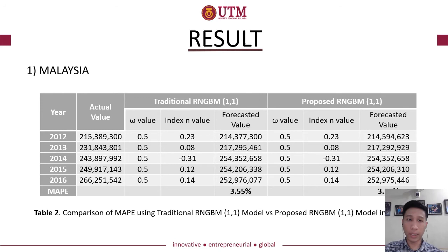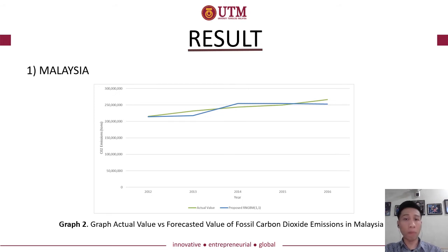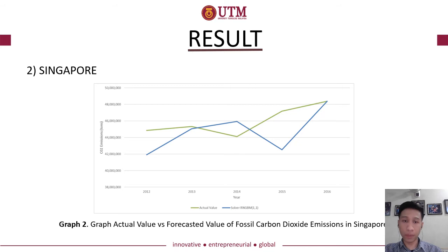From the results, we can see a comparison of MAPE using the traditional NGBM(1,1) model versus the proposed RNGBM(1,1) model. It shows that by using the proposed RNGBM(1,1) model with GRG non-linear method of optimization, the forecast ability is improved. A graph of comparison between the actual values and the proposed model values is also presented. For Singapore data, the proposed model also shows a better forecasted value compared to the traditional RNGBM(1,1) model, as confirmed by the actual versus forecasted value graph.